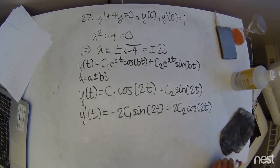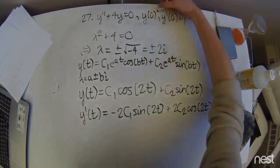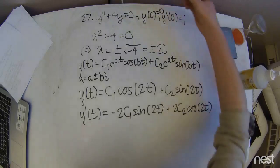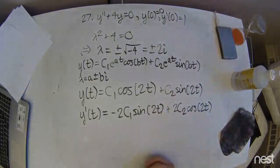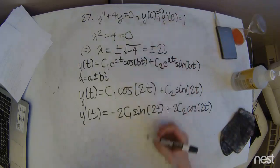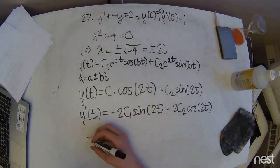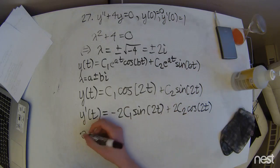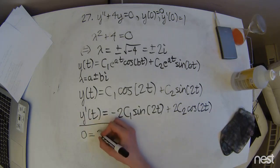Then we can go ahead and actually plug in our initial conditions now. Sorry, this is supposed to say 0. So doing that part first, we're going to get 0 equals c1.